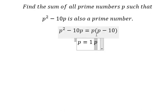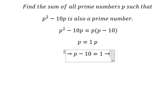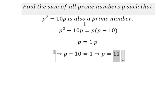So we have p - 10 equals 1, which means p equals 11. We know that 11 is a prime number, and that's the only option in this case.